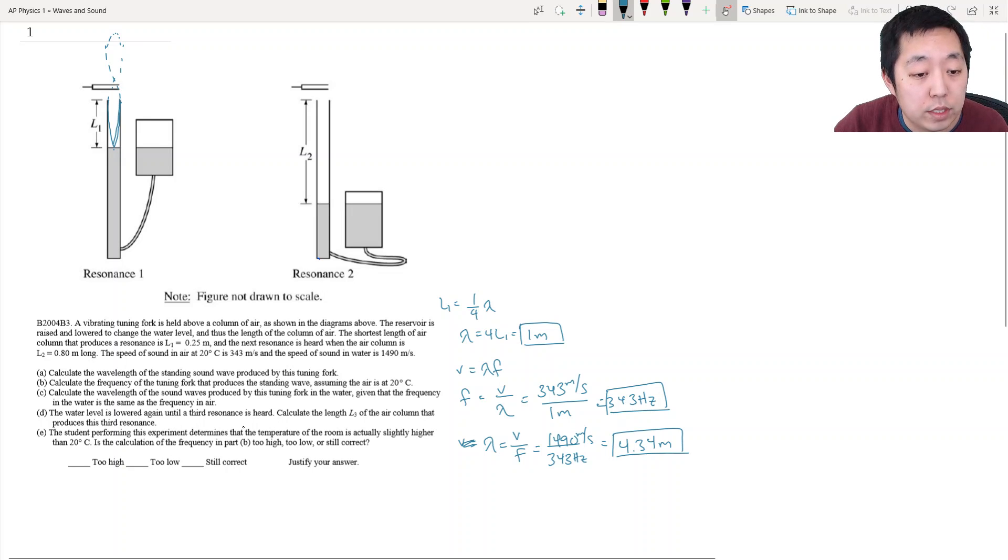The water level is lowered again until a third resonance is heard. Calculate the length L3 of the air column that produces the third resonance. Well, when it's an open air column, the second resonance looks like this. It's like that. Okay. And then the third one would look like a point here. I always have to draw them. So this is the first opening. That would have been the second opening. Like I usually draw like a whole bunch. And then I consider, so this is the first opening, this is the second opening, this is the third opening right here.